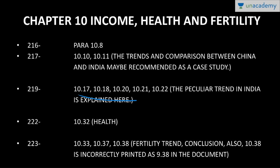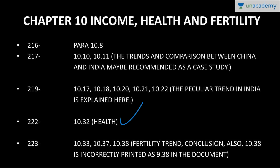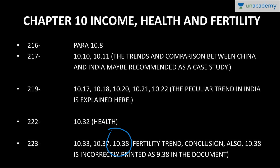On page 219, paragraphs 10.17, 10.18, 10.20, 10.21, and 10.22 explain the peculiar trends of India, which makes them important. On page 222, paragraph 10.32 on health is important. On page 223, paragraphs 10.33, 10.37, and 10.38 cover total fertility rate and conclusion — read these. Note that 10.38 was mistakenly printed as 9.38, so check for that.